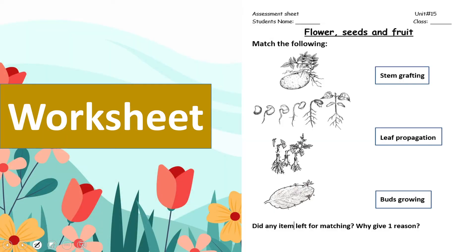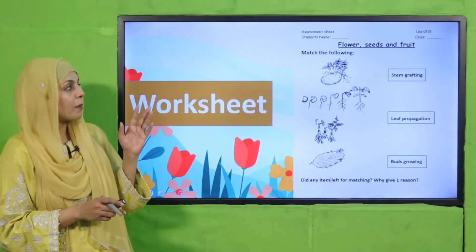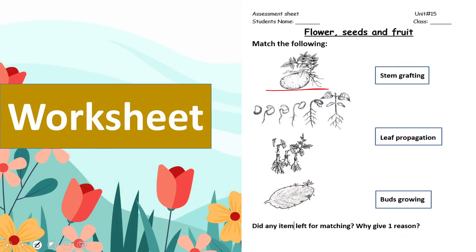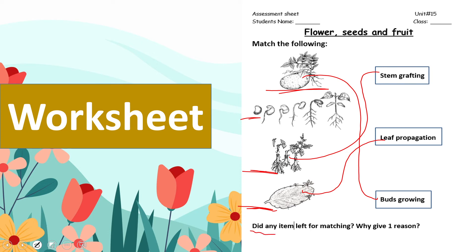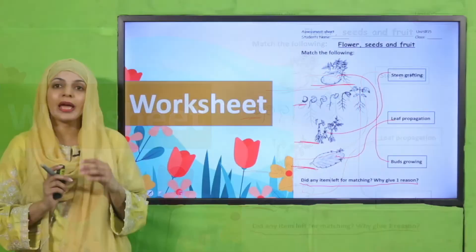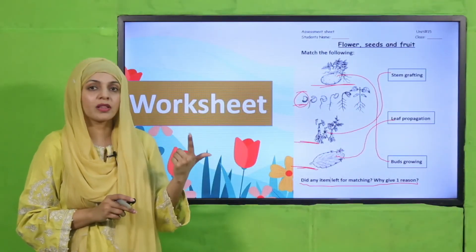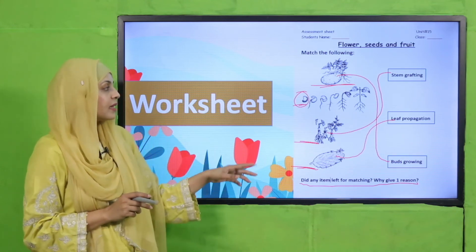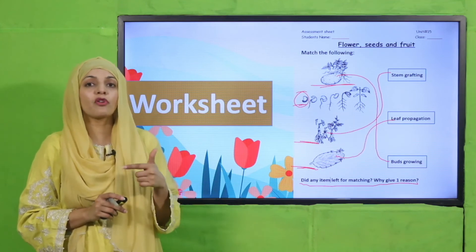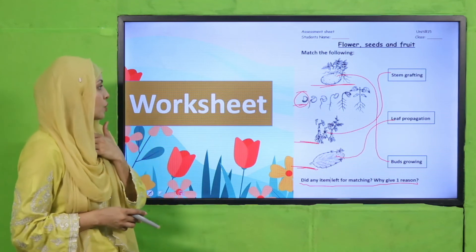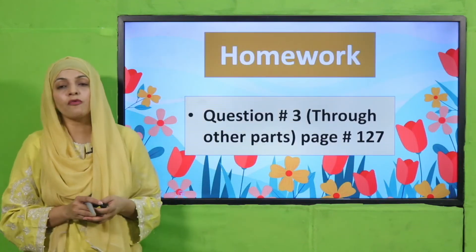Now it is time for practice. You can download this worksheet from the description box below this video, or get it in print form from your teacher. Write your name and class, then match the following: potato matches with bud growing, leaf propagation, and stem grafting. Did any item remain unmatched? Yes — one item is left because it is growing from seeds, which is a different mode. You will write the reason that it is left because it is growing from seed, not from any other part of the plant.